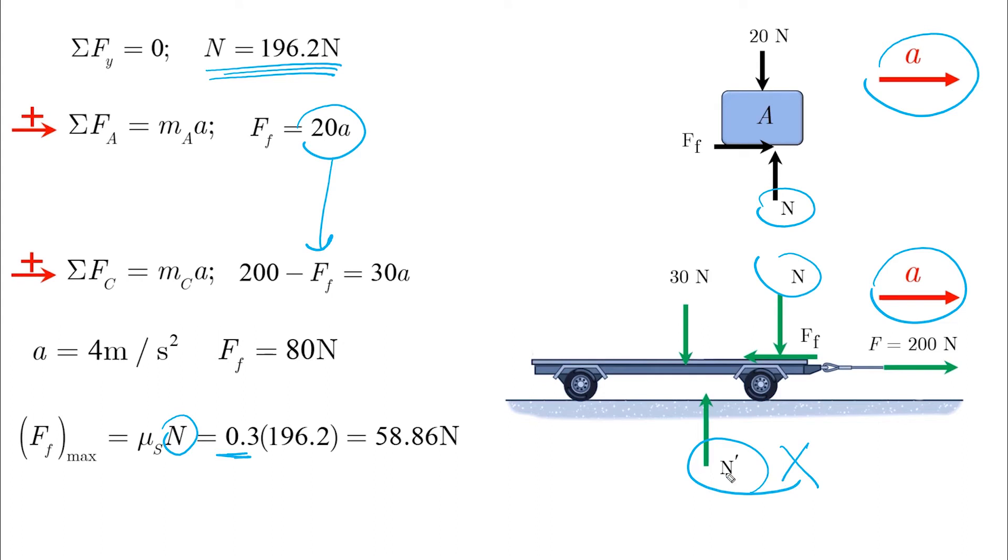So by doing that, μs is given, and N is also found from the first equation. So we find the maximum static friction as around 59 Newtons. And clearly our friction force that we found is more than the maximum static friction.